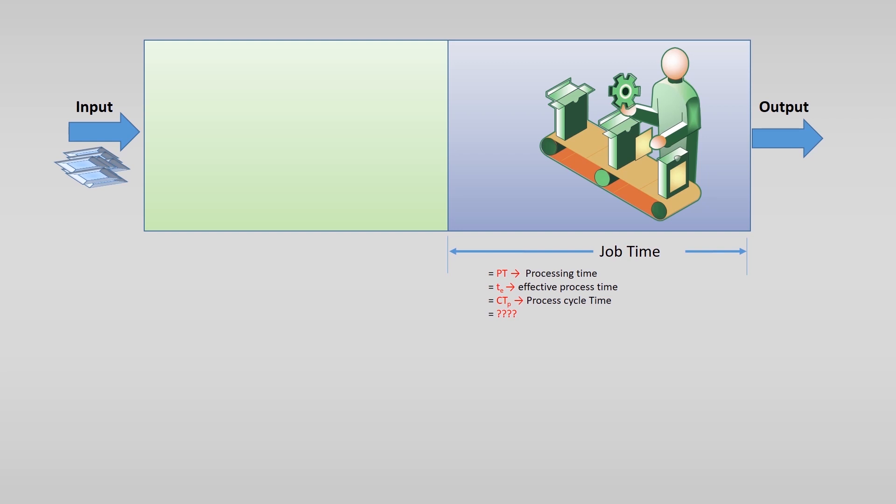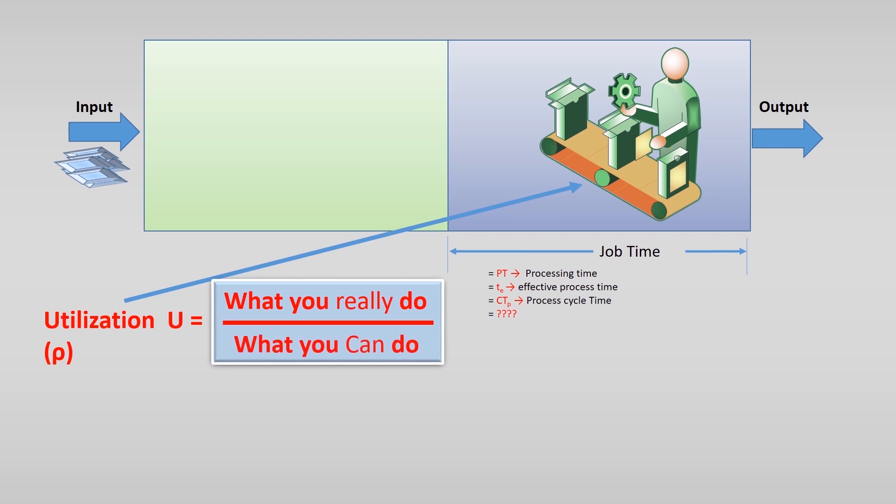Let's look at this production system with a job and before the job a queue. We are specifically interested in the utilization of the job and we saw in the previous video that the utilization is what you really do divided by what you can do.